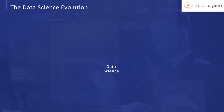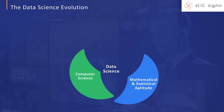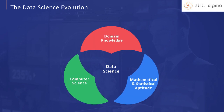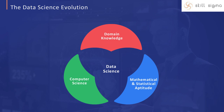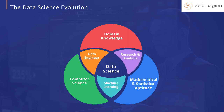Thus, data science is a combination of various disciplines including mathematics, computer science, as well as specific domain knowledge. While this field might be a dream come true for people who enjoy analyzing data and could happily spend all day looking at histograms and averages, data science also offers a range of roles and requires a range of skills for those who prefer other activities.